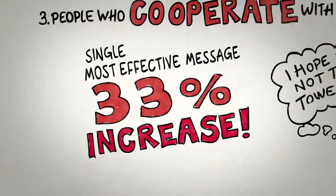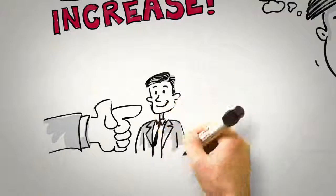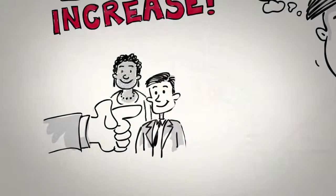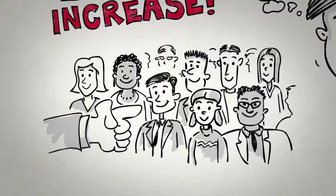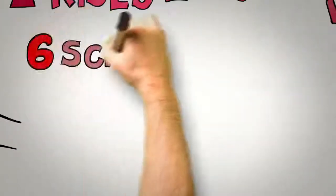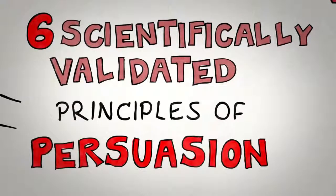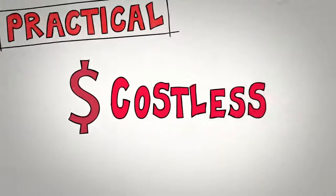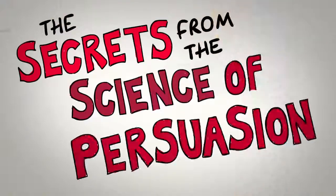So the science is telling us that rather than relying on our own ability to persuade others, we can point to what many others are already doing, especially many similar others. So there we have it. Six scientifically validated principles of persuasion that provide for small, practical, often costless changes that can lead to big differences in your ability to influence and persuade others in an entirely ethical way. They are the secrets from the science of persuasion.